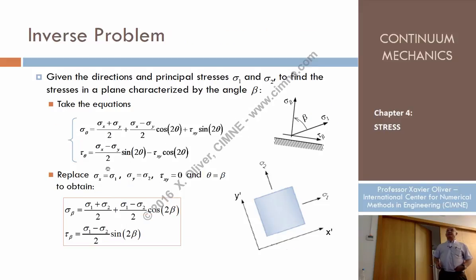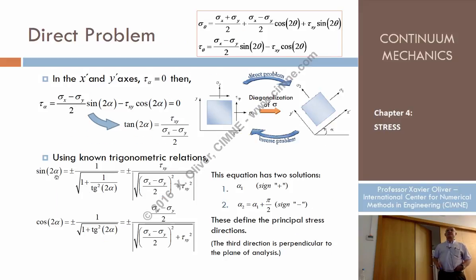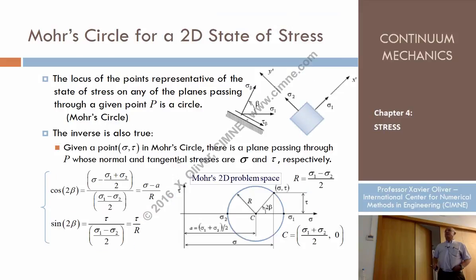Well, what I have to solve is the solution for the angles, cosine of beta and sine of beta. Sine of 2 beta can be computed in that way, with sine minus a divided by r, a being the center. And sine of 2 beta is tau divided by r, r being that distance here.